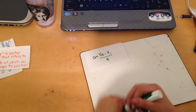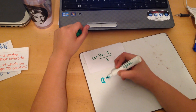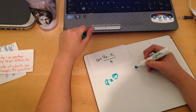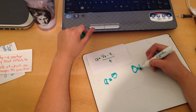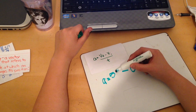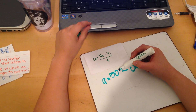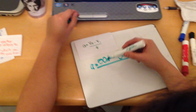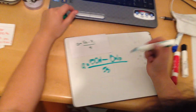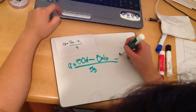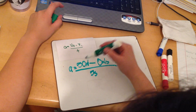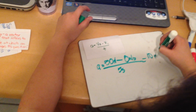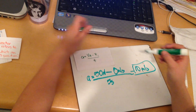Here's an example: acceleration equals final velocity minus initial velocity divided by time. You start at zero meters per second because your car is not moving, and you accelerate up to 50 meters per second. This took a total of 5 seconds. So: 50 minus 0 is 50, divided by 5 is 10. Your total acceleration is 10 meters per second squared.